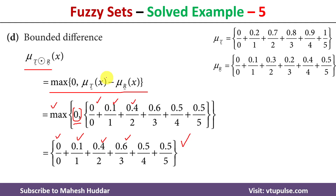So in this video I have discussed how to calculate the algebraic sum, algebraic product, bounded difference and bounded sum for two given fuzzy sets. I hope the concept is clear. If you like the video, do like and share with your friends. Press the subscribe button for more videos and the bell icon for regular updates. Thank you for watching.